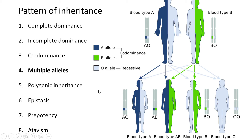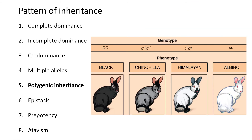Another pattern is called polygenic inheritance. Polygenic means many genes — 'poly' for many and 'genic' referring to genes. In polygenic inheritance you have more than one gene and more than one allele as well. They use capitals and smalls with subscripts for certain alleles on the chromosomes. This can give you, in this case, four different phenotypes for rabbit coat color: black, chinchilla, Himalayan, and albino. The rabbit can have four different color patterns based on what genes and alleles they have paired.